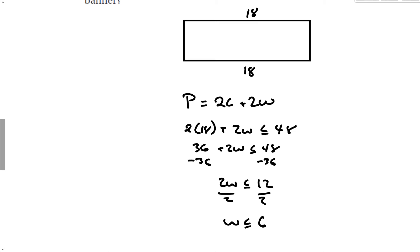In order to have a rectangle, that side has to have some width, so we can't have the width be 0. So the width has to be greater than 0 and less than or equal to 6. We'll talk about how to write things like that in a later section.